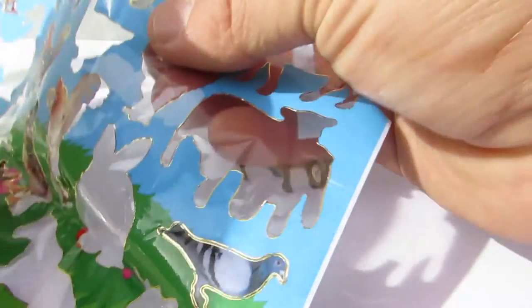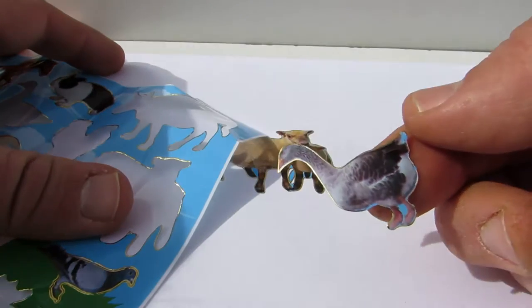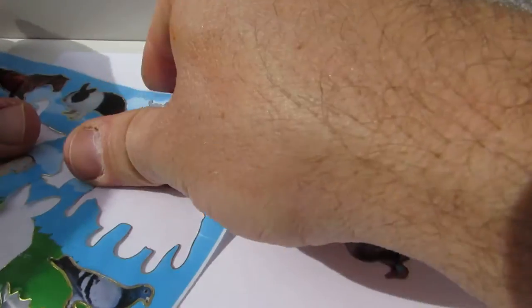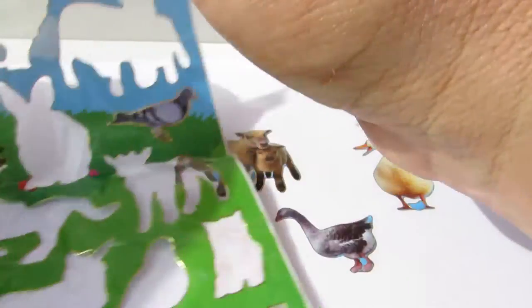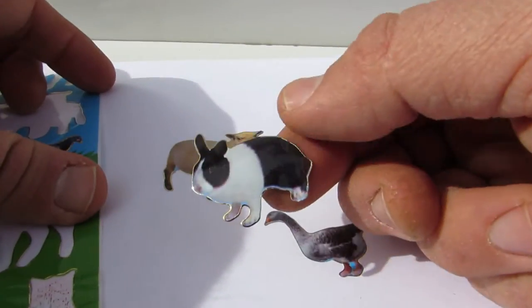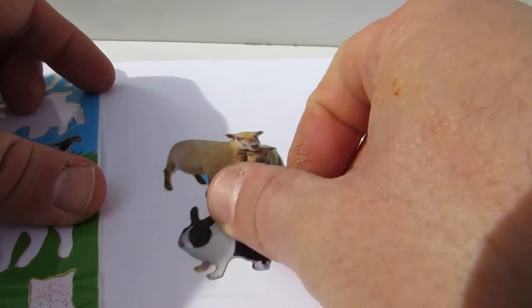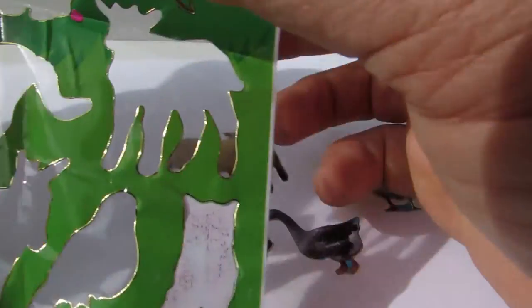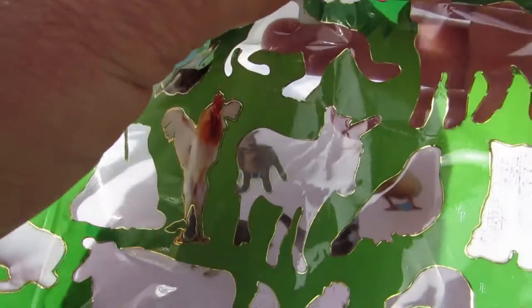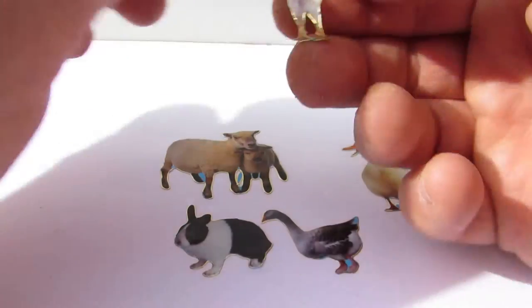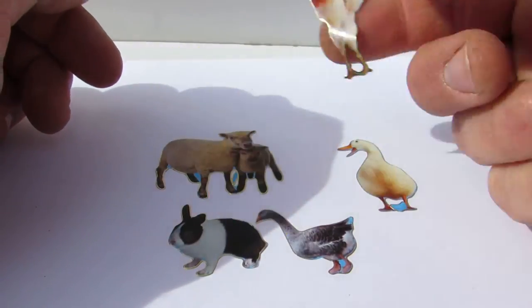And we have a goose, looks like a goose. What do you say about this? And we have a rabbit, or whatever it is. And a rooster, rooster.